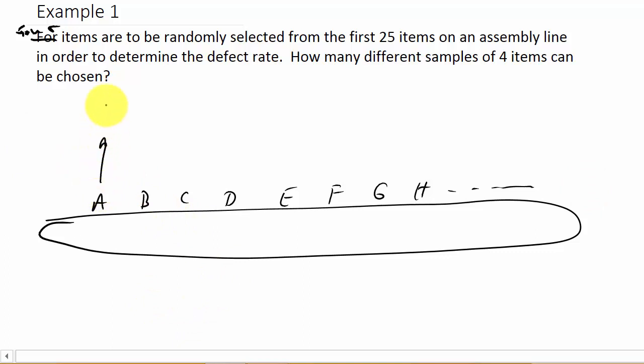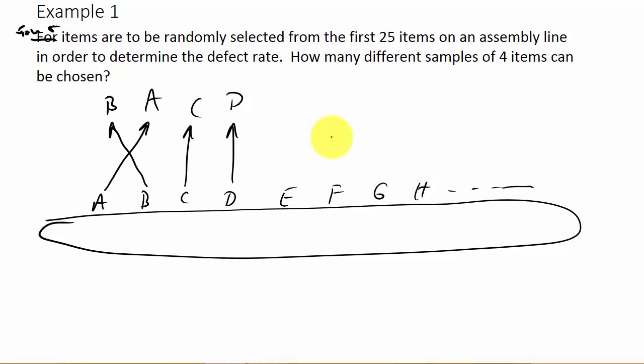So let's suppose I choose A, B, C, and D, and I check them to see if they're defective and then put them back or throw them away. Now let's suppose I chose B first, then A, then C, and then D. So B, A, C, D. I chose the same four items but in a different order, and I'm going to check them to see if they're defective. Well, did that make a difference? No. It made no difference the order that I chose them because all I'm doing is choosing them to see if they're defective or not.